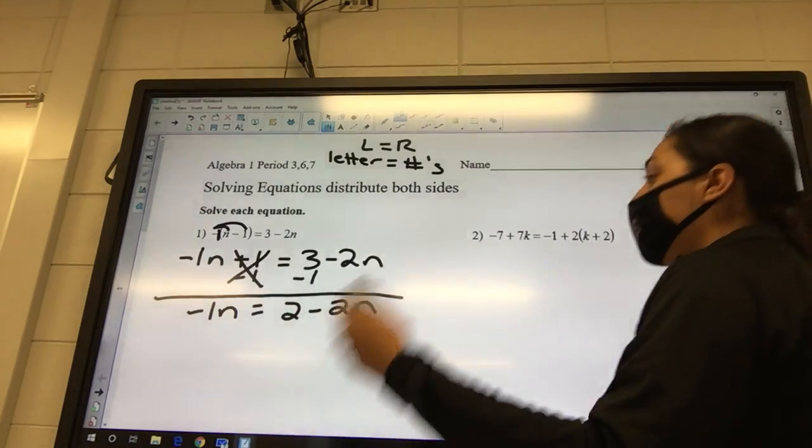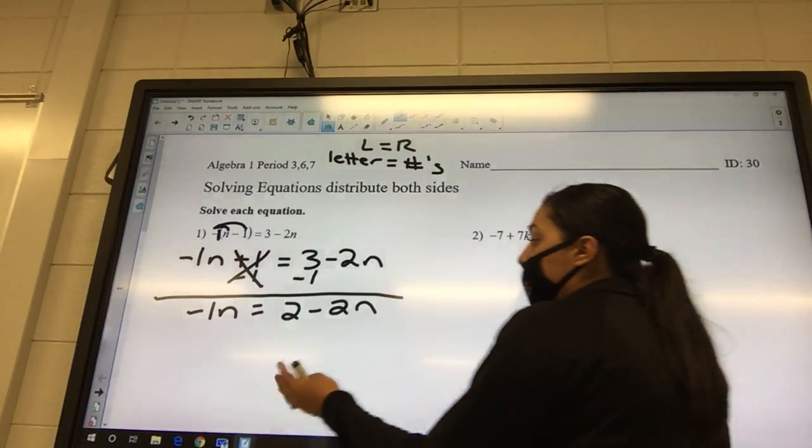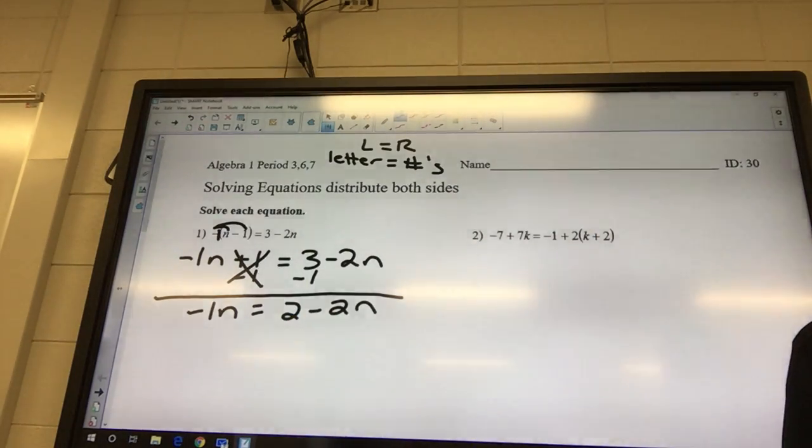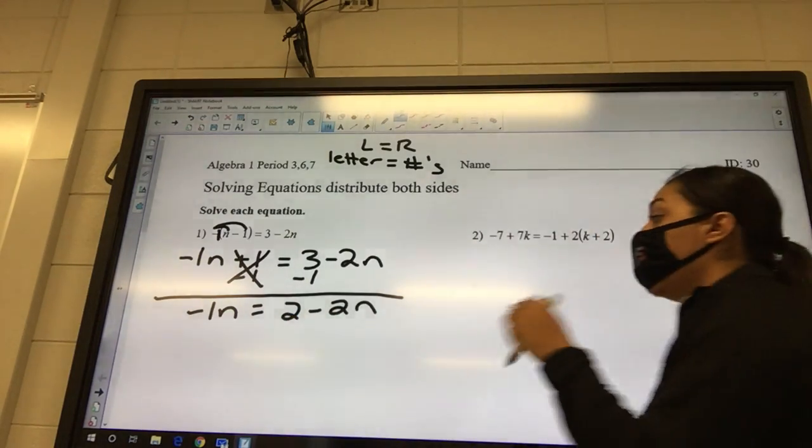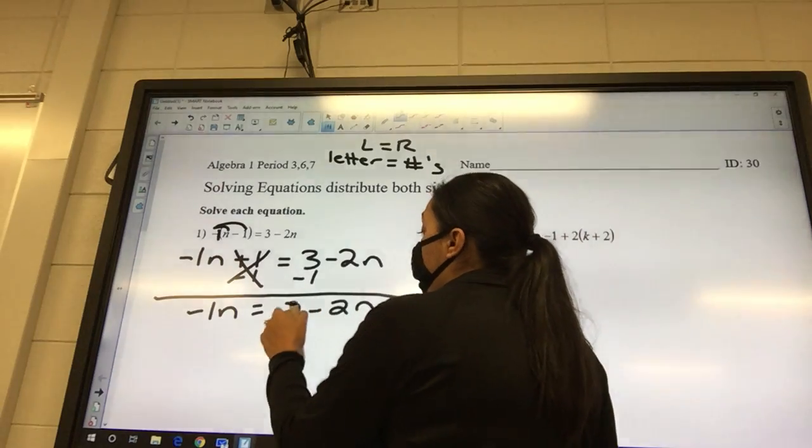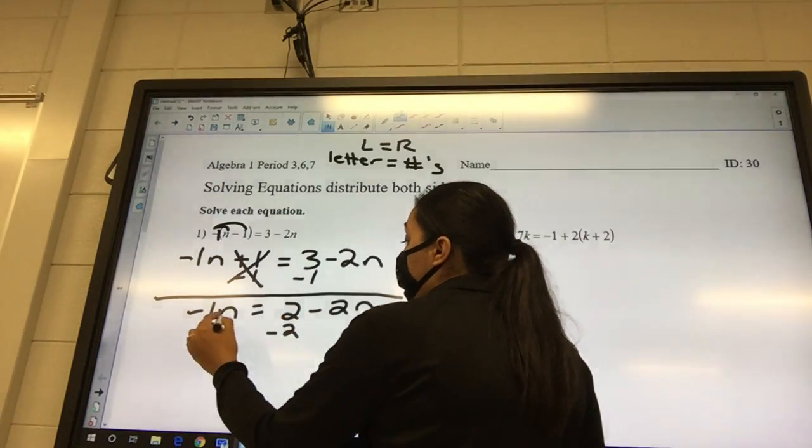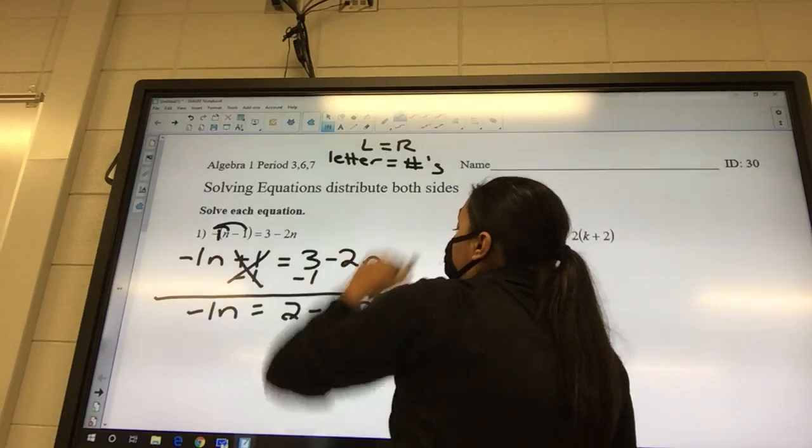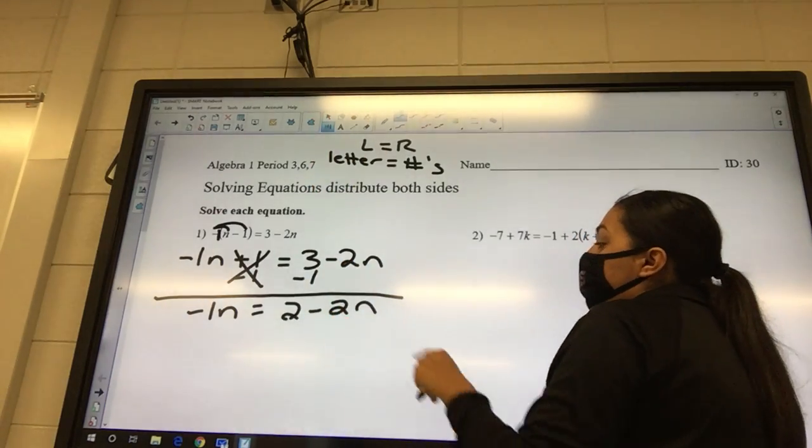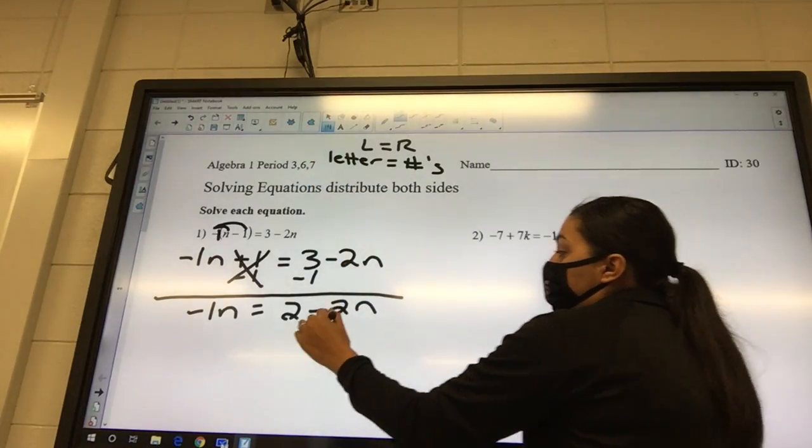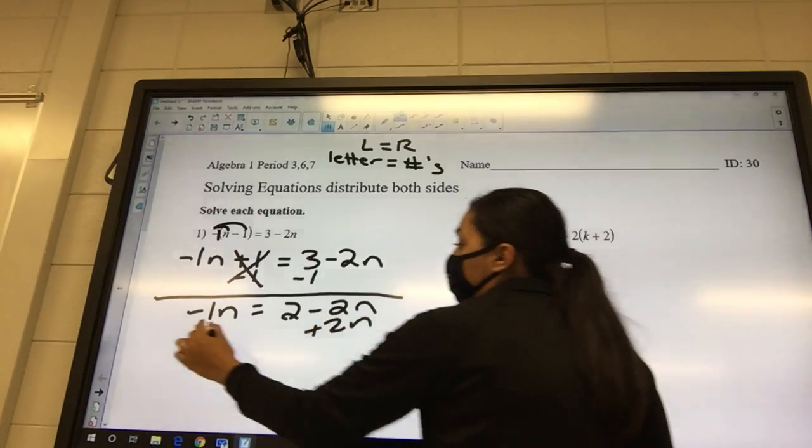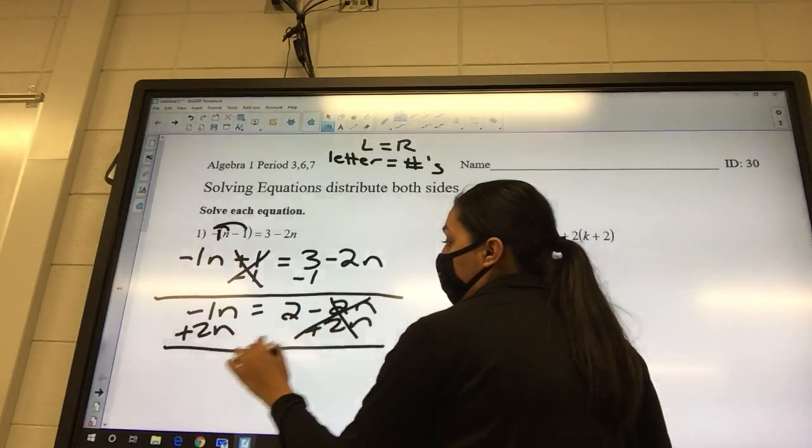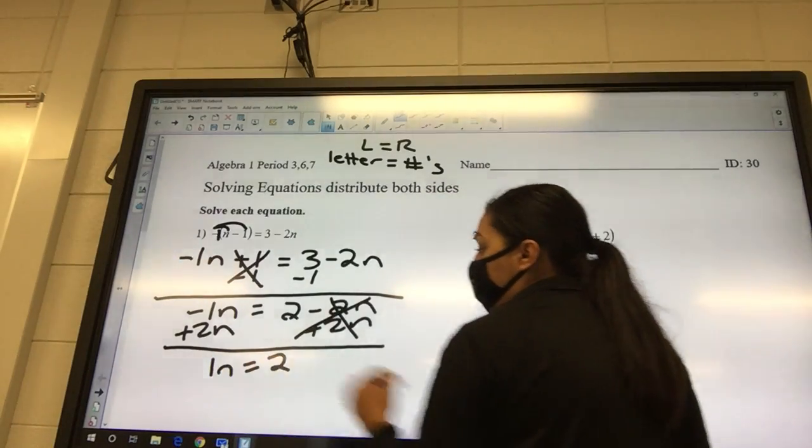Okay, the one n we already know is a letter, so it stays on the left. The two, is that a letter or a number? It's just a number. Wait, no I'm tripping. The two n needs to be moved because it has a letter. So we're gonna say plus two n, plus two n. So I got one n equals two.